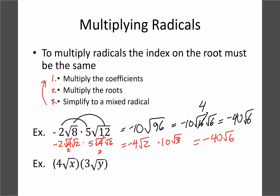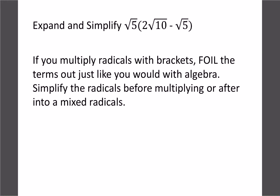The same rules still apply even with variables. So 4 times 3 is 12, and x times y under the radical would just be root xy.